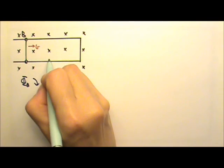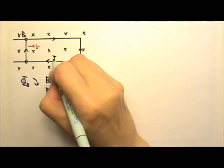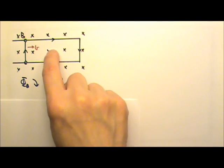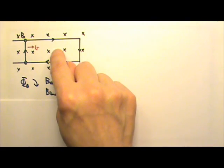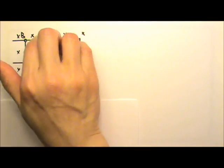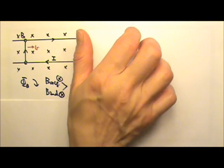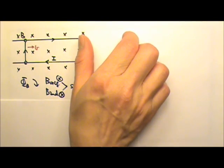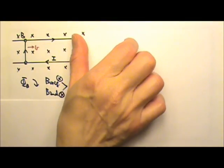So the current flows this way, up, to the right, and down. Notice that we always look at the magnetic field inside the loop, not outside, because it is the field inside that provides the flux. That is why we use the field inside the loop to decide the direction of the induced current.